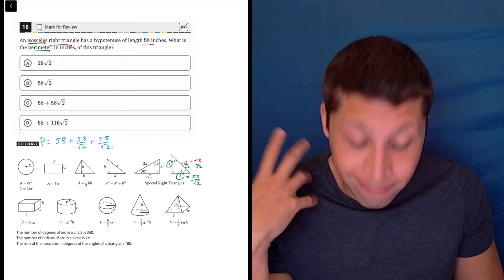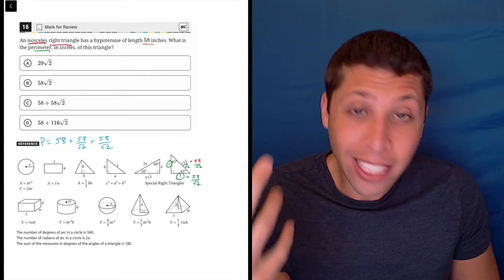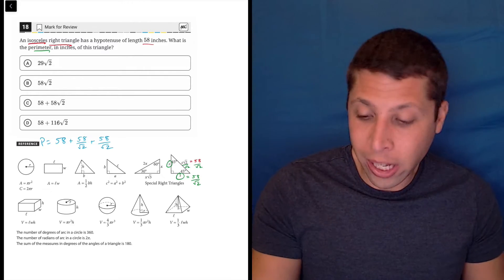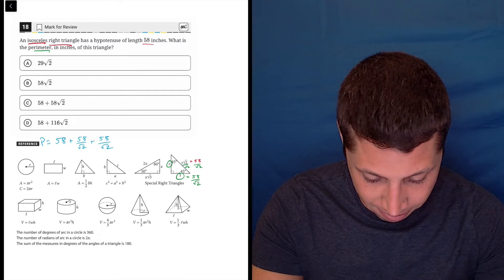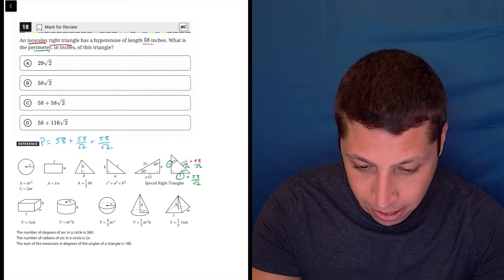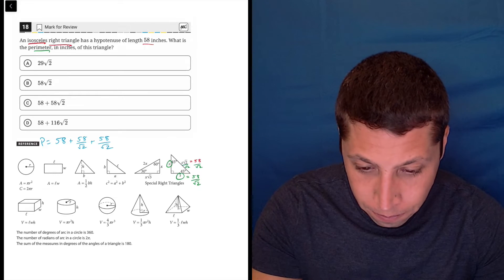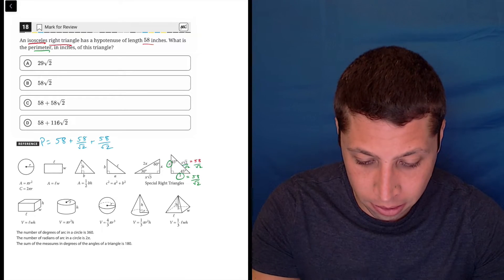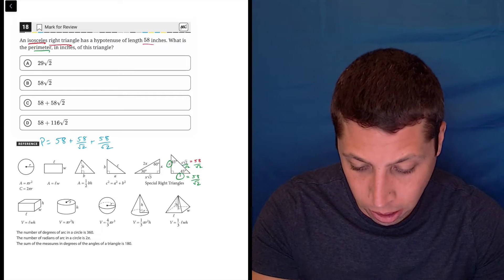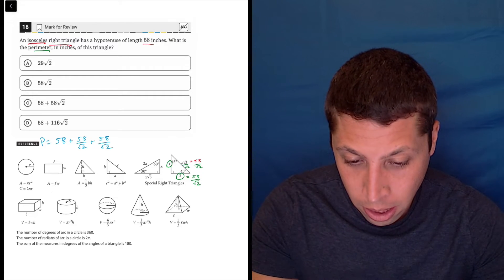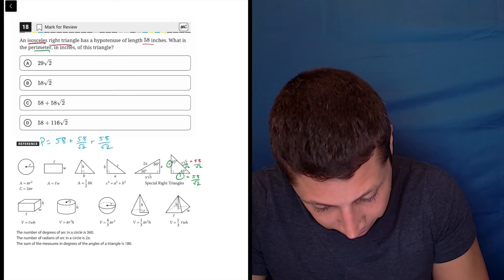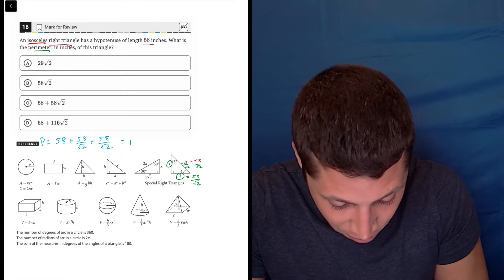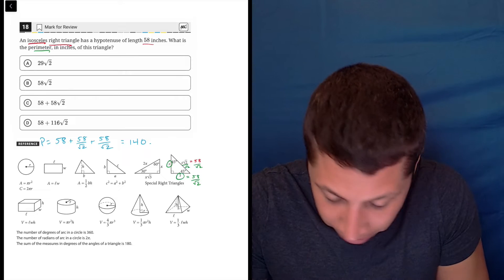Now, honestly, the best thing here is just let the calculator do the work. So you can enter this in the calculator, I'm going to get you your decimal, 58 plus 58 divided by the square root of 2, got to be a little careful with parentheses here, plus 58 divided by the square root of 2 is, let's put it here I guess, 140.024.